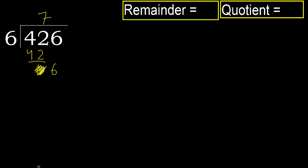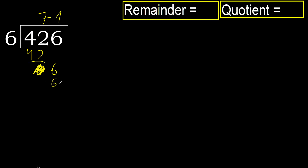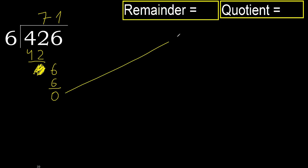Eliminate 0, bring down 6. 6 multiplied by 1 is 6, which is not greater. Subtract. Next, there is no number, therefore finish it.